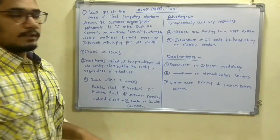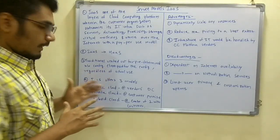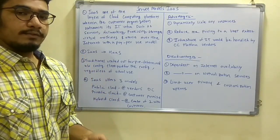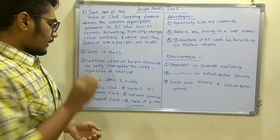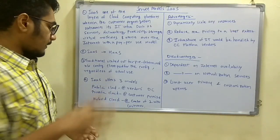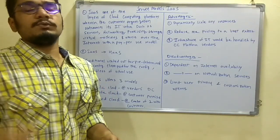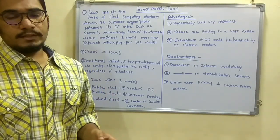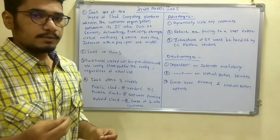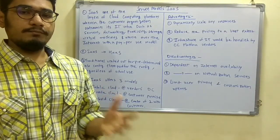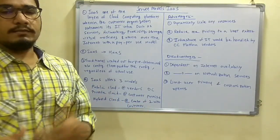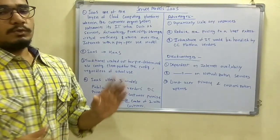IaaS offers three different deployment models: public cloud, private cloud, and hybrid cloud. The public cloud is located at the vendor's data center, the private cloud is at the premises where the customer resides, and the hybrid cloud chooses the best of both — it can be hosted based on the customer's preference, acting as a mixture of both public and private.